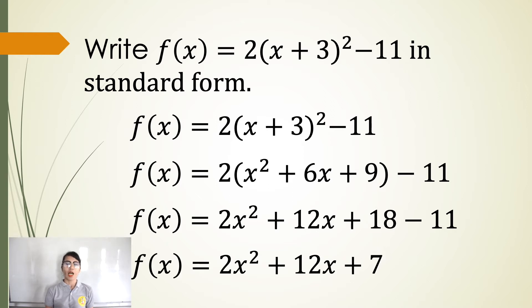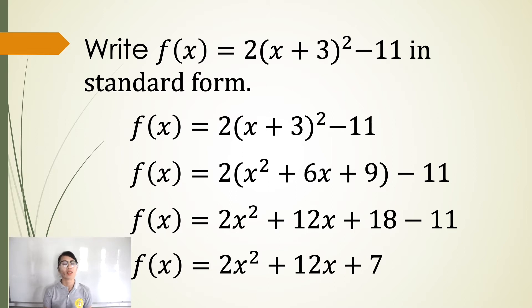Then, apply the distributive property. So we have 2 times x squared equals 2x squared, plus 2 times 6x equals 12x, plus 2 times 9 equals 18, minus 11. Then simplify. So we have 2x squared plus 12x plus 7.